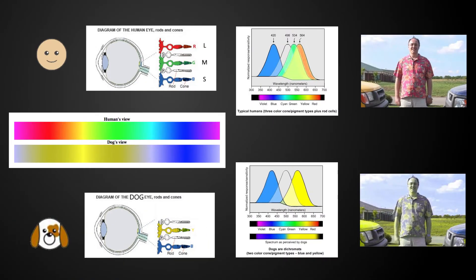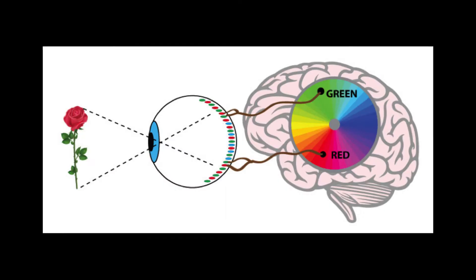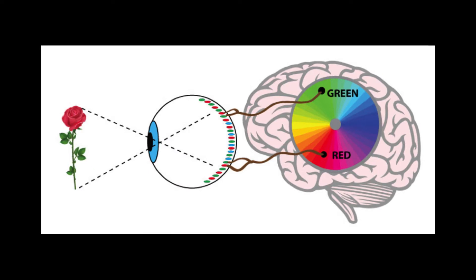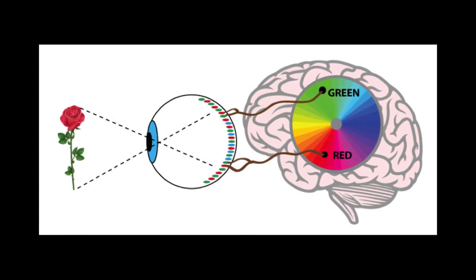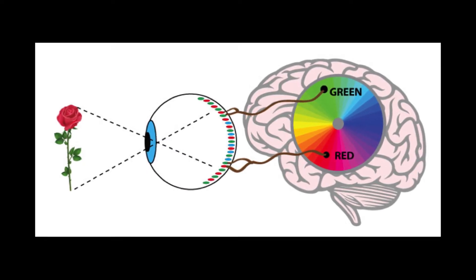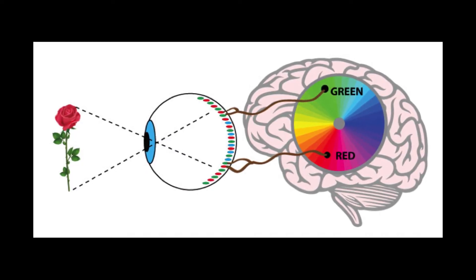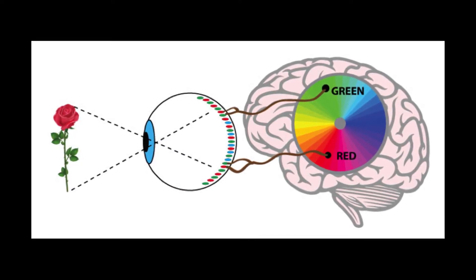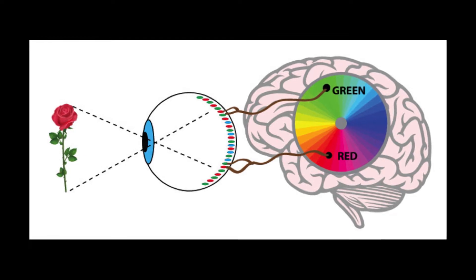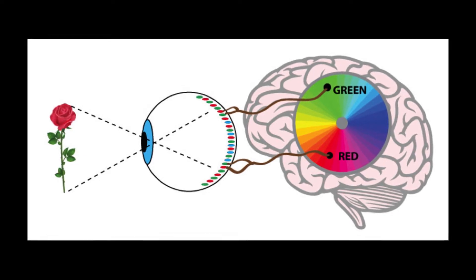Unlike, say, dogs, our eyes can separate red and green light. Our brains gauge the amount of red and green energy and mix it into a new perceived color.